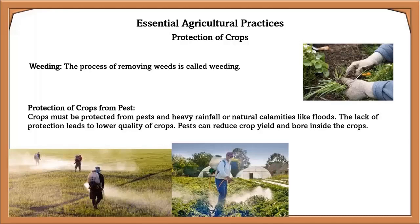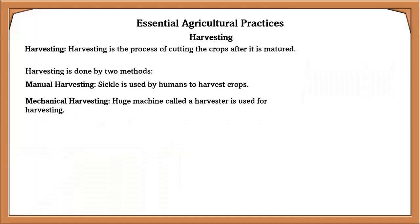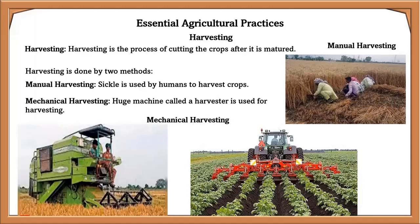Harvesting is the process of cutting crops after they are matured. It is done by two methods: manual harvesting, where a sickle is used by humans, and mechanical harvesting, where large machines called harvesters are used.